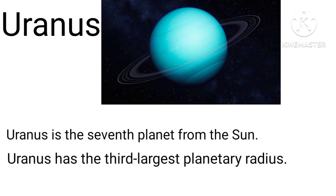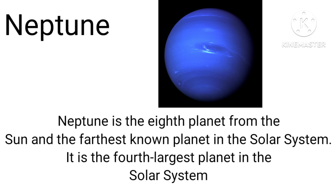Uranus is the seventh planet from the sun. Uranus has the third largest planetary radius. Neptune is the eighth planet from the sun and the farthest planet in the solar system.